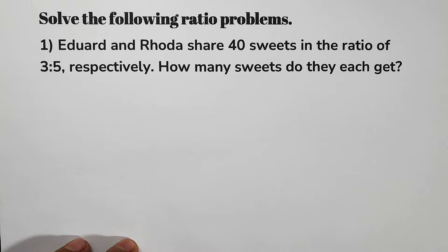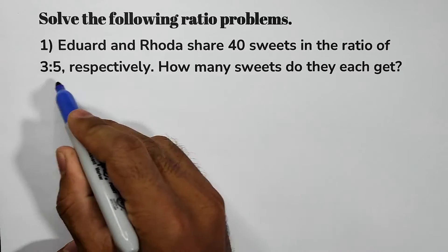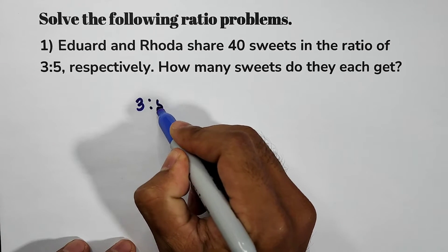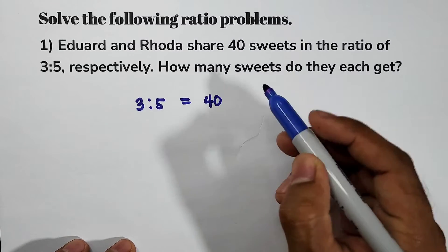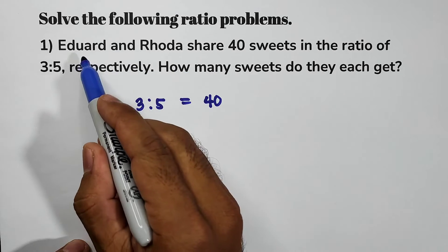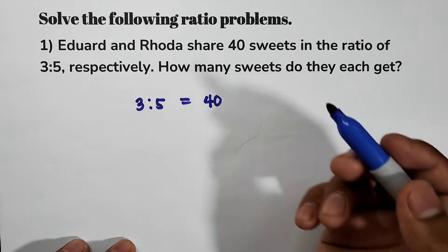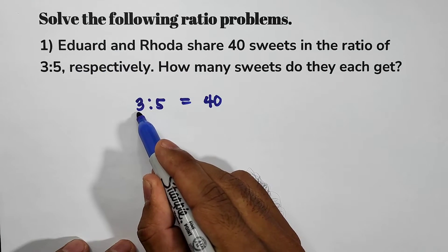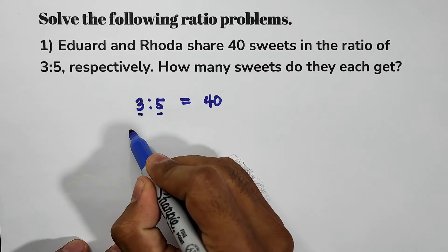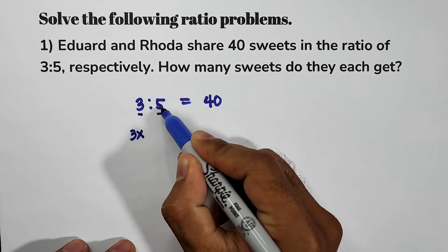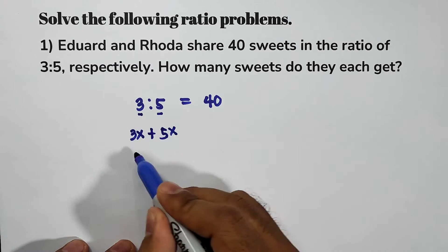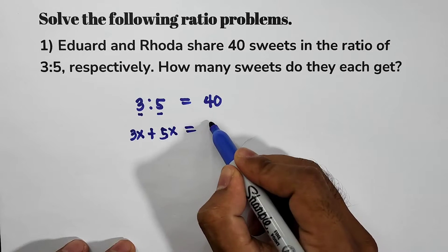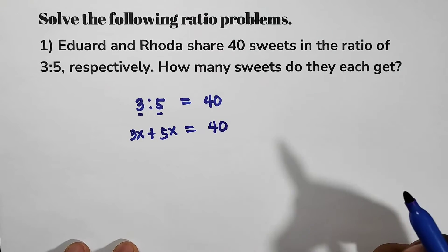For you to easily understand this problem, let us have 3 to 5 as our ratio, and that is equal to 40 sweets that we are going to divide for Rhoda and Edward. So now, 3 to 5, let's make it 3x and then 5, let's make it 5x, and then add 3x and 5x and that is equal to 40.